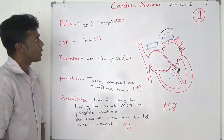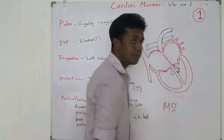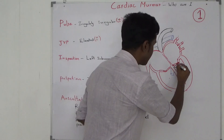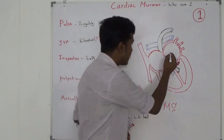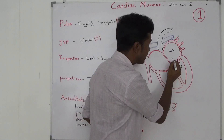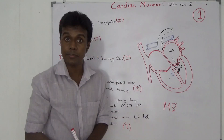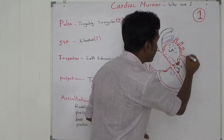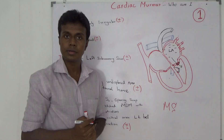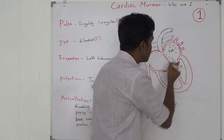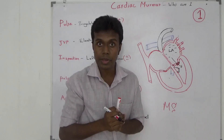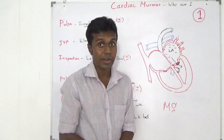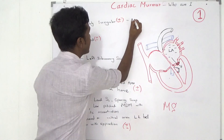Why do they develop an irregularly irregular pulse? The mitral valve becomes stenosed. The left atrium has difficulty emptying into the left ventricle, so the left atrium chronically enlarges. With that chronic enlargement, the electrical current in the left atrium becomes disturbed, and they develop atrial fibrillation — that is why there is an irregularly irregular pulse.